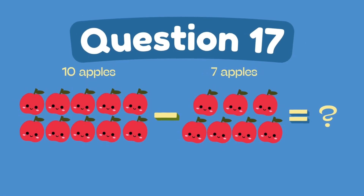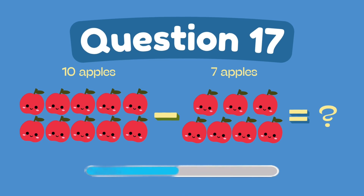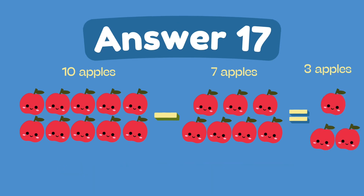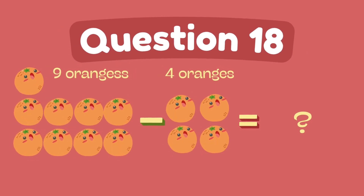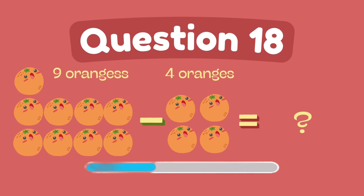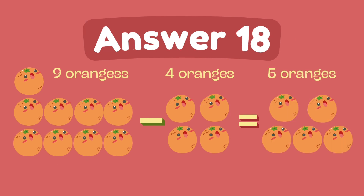What is 10 minus 7? The answer is 3. What is 9 minus 4? The answer is 5.